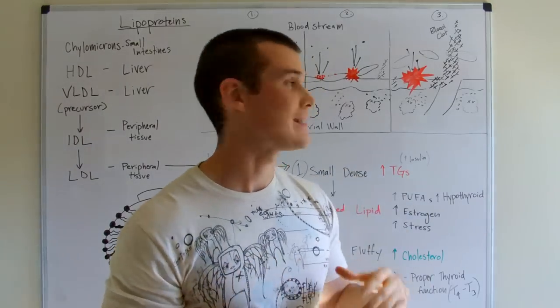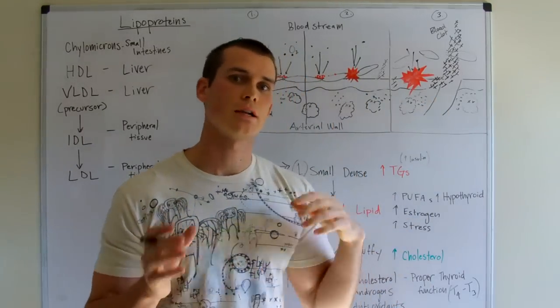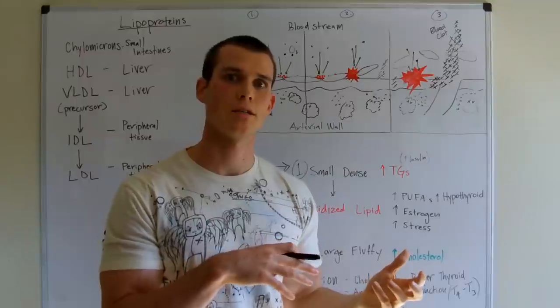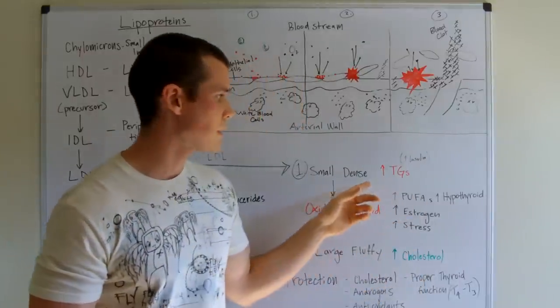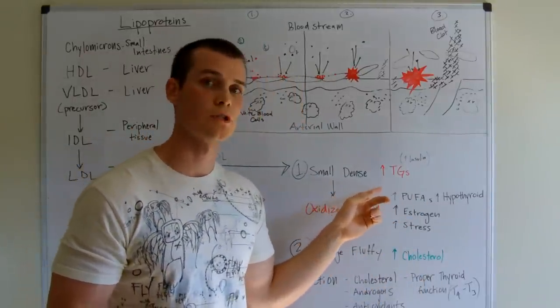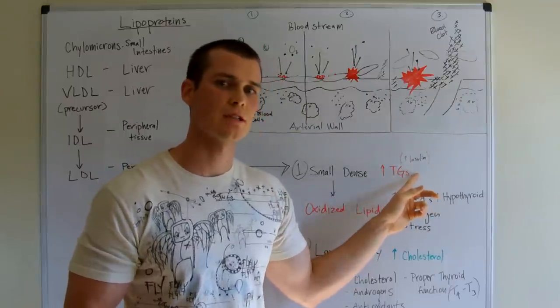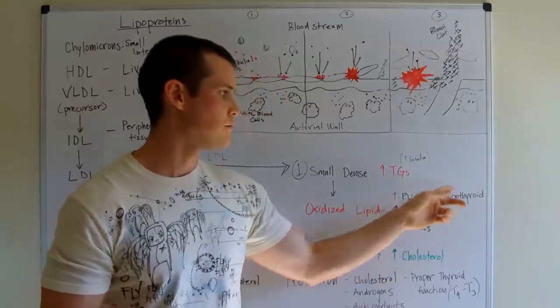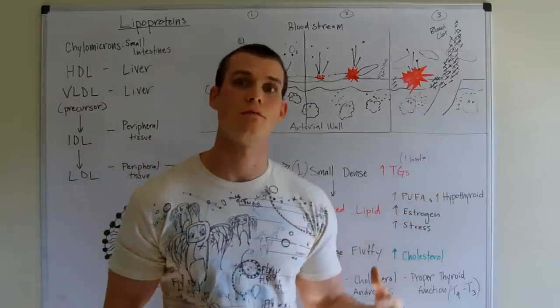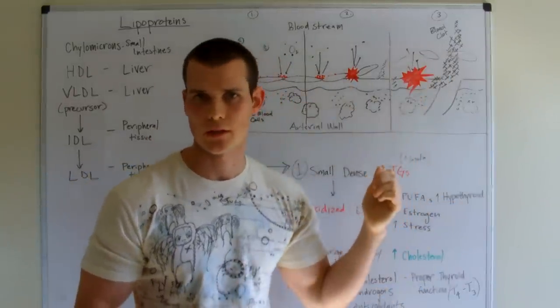So we got to understand that distinction and understand that it's not necessarily fatty deposits that's causing the huge problem. But maybe it's because we have too many small dense, which is from carbohydrates, not balancing our blood sugar or essentially just too much insulin. And then a lot of problems, which is increasing the likelihood of the oxidation within the system.